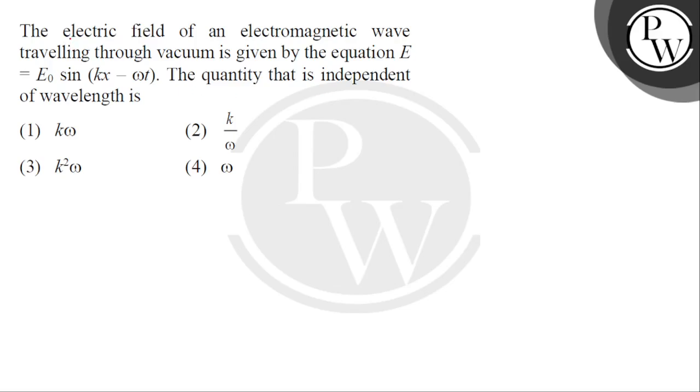Hello, let's read the question. The electric field of an electromagnetic wave traveling through vacuum is given by the equation E equals E0 sin Kx minus omega t.